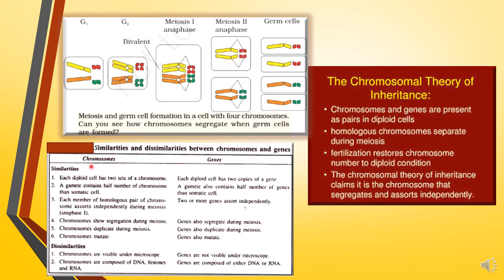There are certain similarities between chromosomes and genes. Each diploid cell has two sets of chromosomes. Similarly, each diploid cell has two copies of a gene, because genes are located on chromosomes — when there are two chromosomes, the genes are also present in two copies.